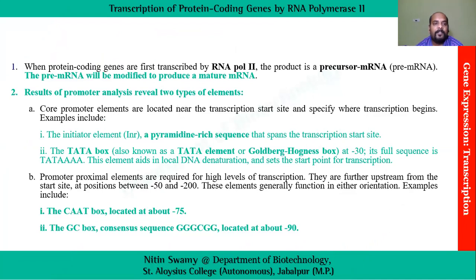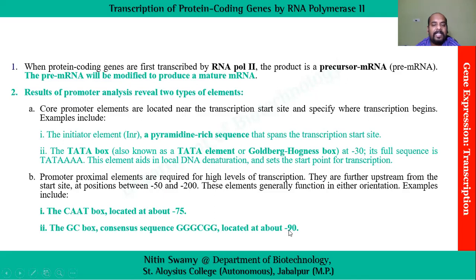After discussing polymerases, we shift our focus to the promoter. The promoter is that region where the entire mechanism starts. In eukaryotic transcription we have two types of promoter sites: one is the core promoter site and the second is the proximal promoter site, which is somewhat far from the starting point. The core promoter initiates at a pyrimidine-rich sequence and has a TATA box which is around minus 25 to 30 base pairs upstream, known as the TATA element or Goldberg-Hogness box. The proximal promoter elements include the CAT box at around minus 75 to minus 18, and the GC box at around minus 90 to minus 100.